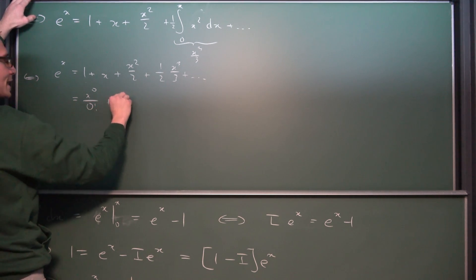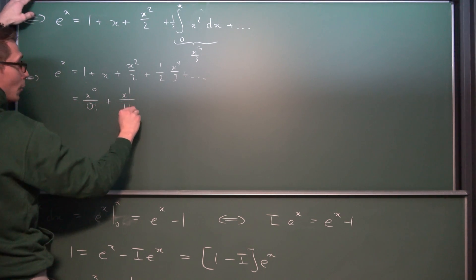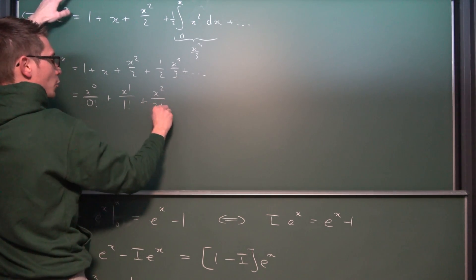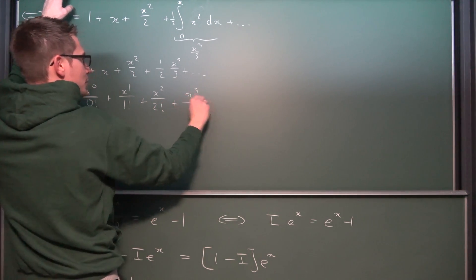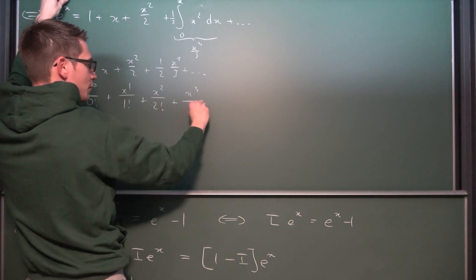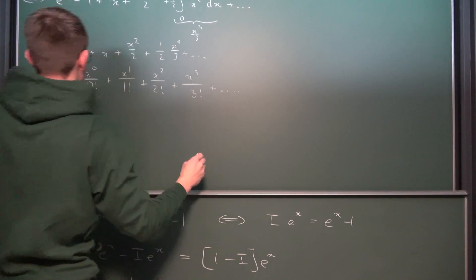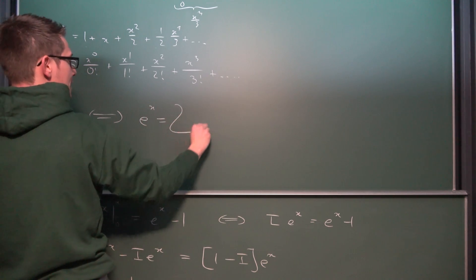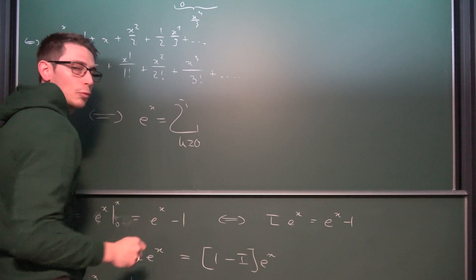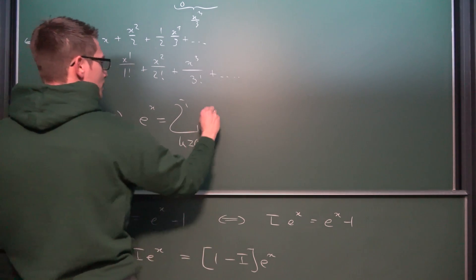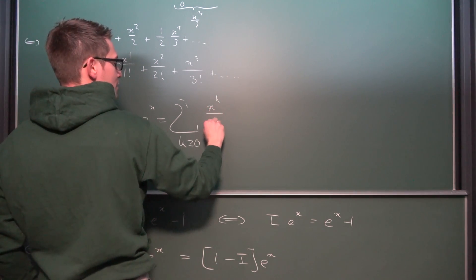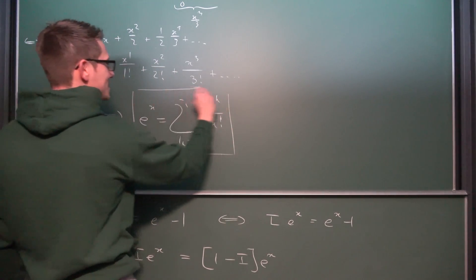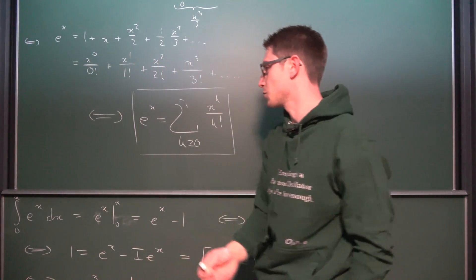We can now recognize the pattern: we get 1 = x⁰/0!, then x¹/1!, then x²/2!, then x³/3!, and so on. This leaves us with the beautiful result that e^x equals the sum where k goes from 0 to infinity of x^k divided by k factorial. And we all know that this is exactly the Taylor series — or Maclaurin series — expansion of the exponential function.